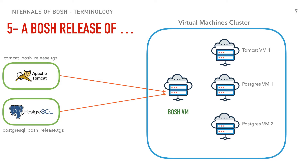The fifth term will be the BOSH release. So until now we know that BOSH can create VMs and install software on them — the software of our choice. For BOSH to be able to do that, one of the steps we need to do is to package our software in a specific format that BOSH can understand. The outcome of this packaging is called a BOSH release. For example, if we want to package Apache Tomcat into a format that BOSH can run, we call that specific package a BOSH release of Tomcat — or a BOSH release of Postgres or RabbitMQ. We give that package to the BOSH director, and it knows what to do with it, to deploy it and to run it.